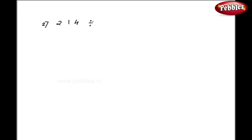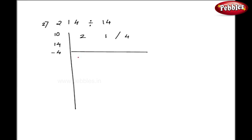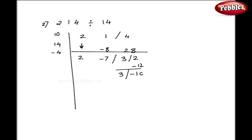Let us take one more example: 214 divided by 14. I'll write 214. My base is 10, so my difference is minus 4. I give a stroke here. As usual, I take this 2 down. Minus 4 into 2 gives minus 8, so the addition is minus 7. Now minus 7: 1 into minus 4 is minus 4, and adding I get 28, then 32. I have to proceed further. Take this 3 down. 3 into minus 4 is minus 12, so I get minus 10.